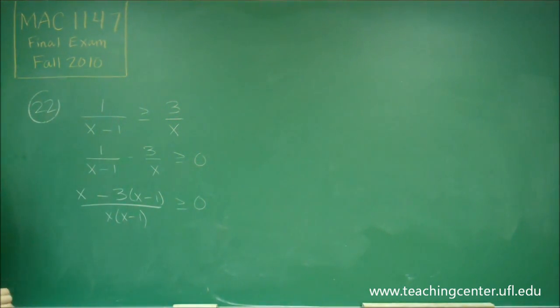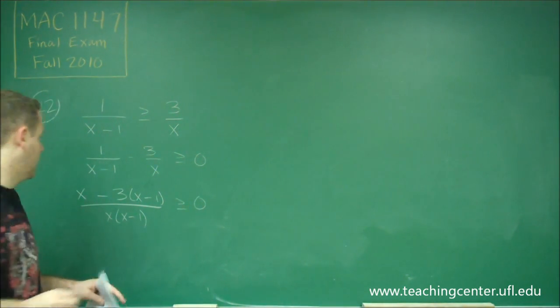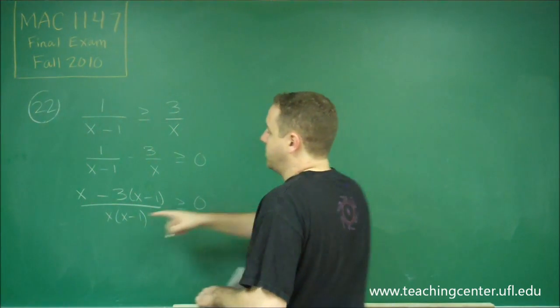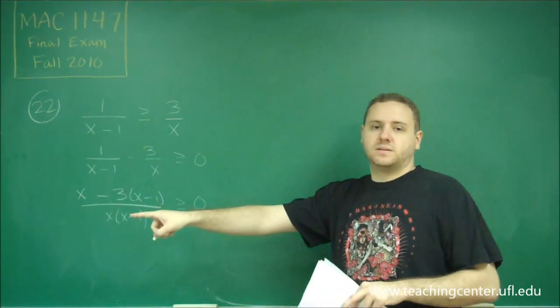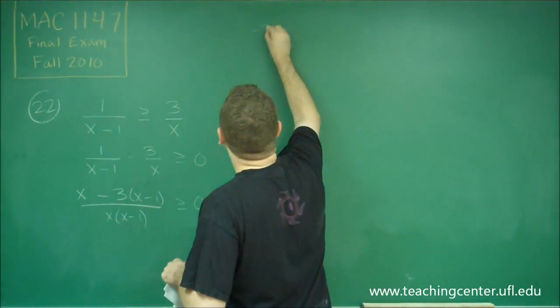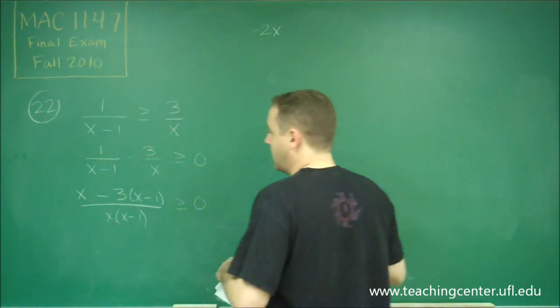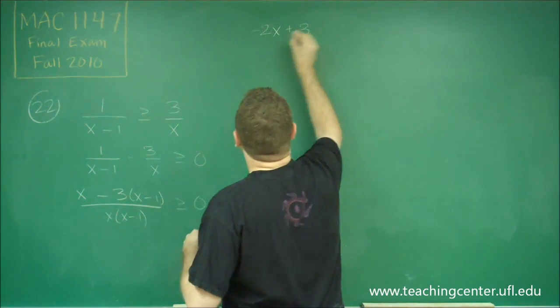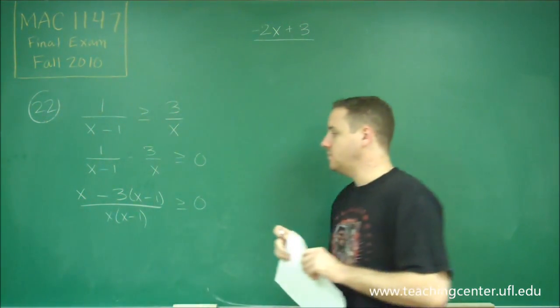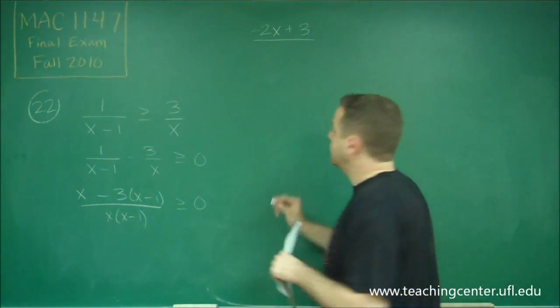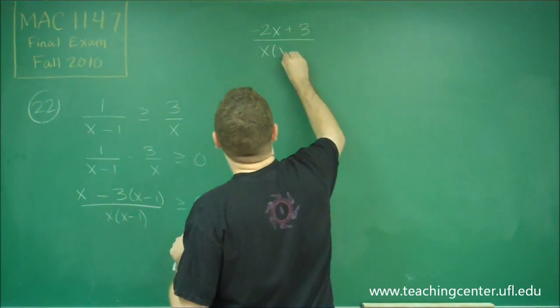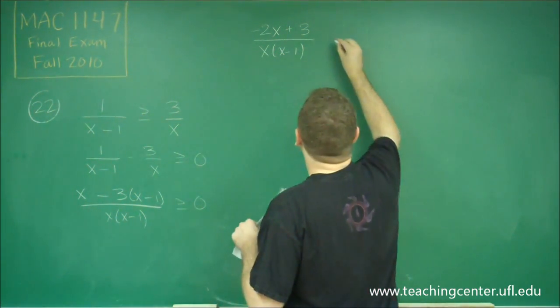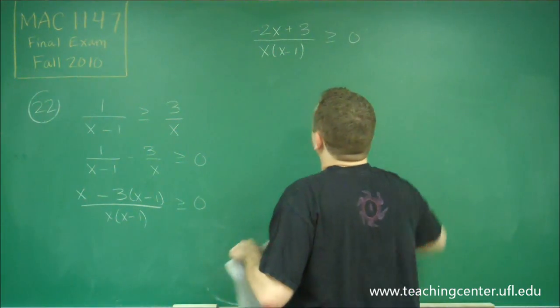Now all we need to do is simplify the numerator. If we distribute all that appropriately, x minus 3x will give us negative 2x, and then we'll have minus 3 times minus 1, which would be plus 3. So that's all over x times x minus 1, and this has to be greater than or equal to 0.